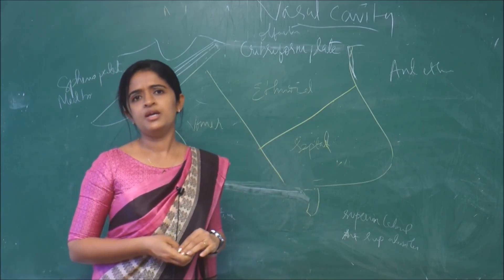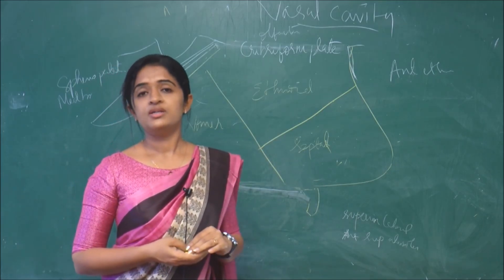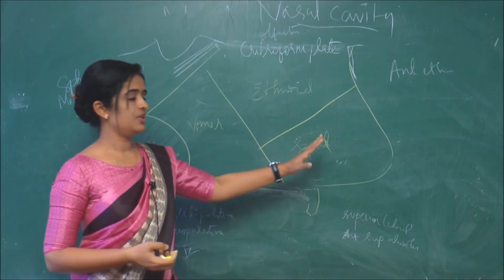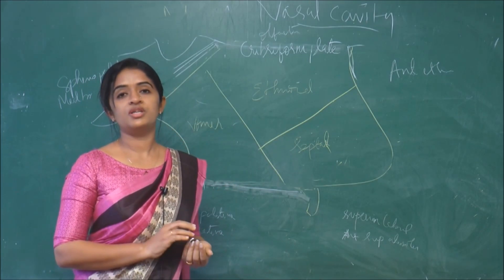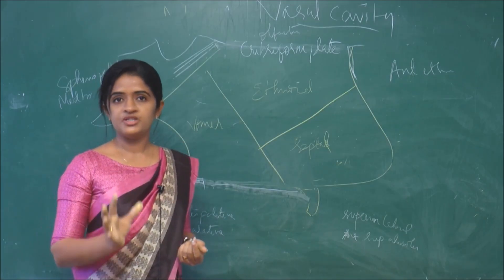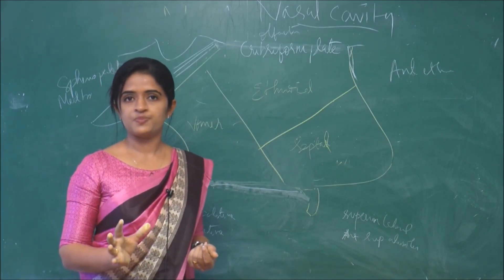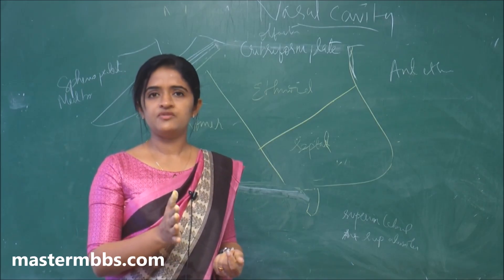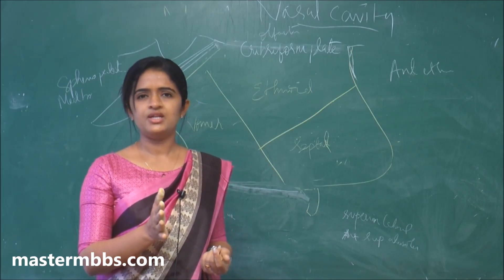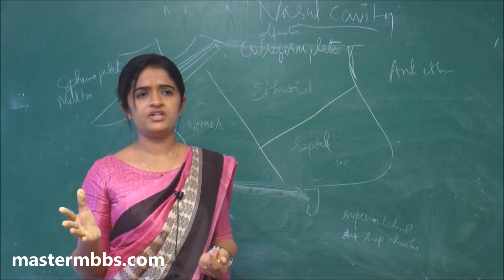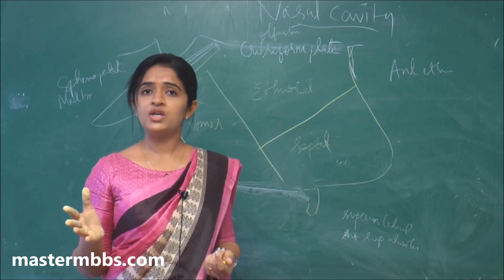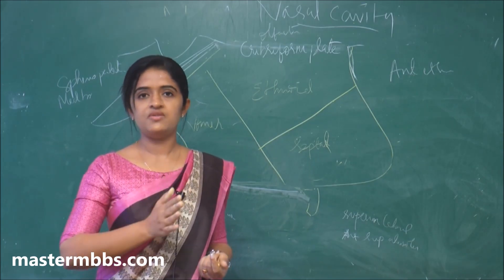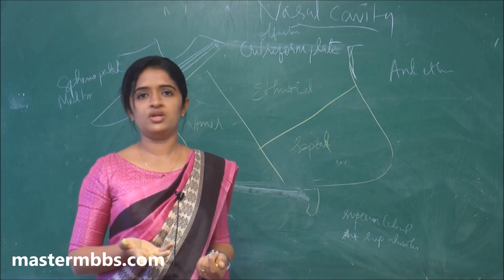First we will be talking about the nasal septum. When we talk about the nasal septum, we should know what are the components which make it up. Even though we say that the nasal septum is lying in the middle of the nasal cavity, it is not actually dividing the nasal cavity into two equal halves. It is not a single straight line — it has a deviation to the right or left.